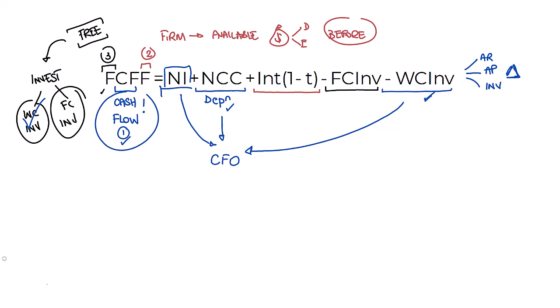If we start with CFO, we've taken net income, we've adjusted for working capital, and we've adjusted for non-cash charges. So you're almost there. All you need to do is add back interest after 1-T or into 1-T and knock off fixed capital investment. And you have free cash flow to the firm. That is a much quicker way of doing it.